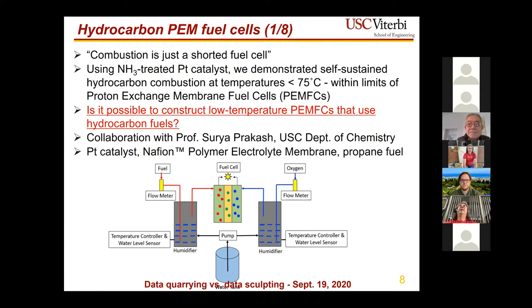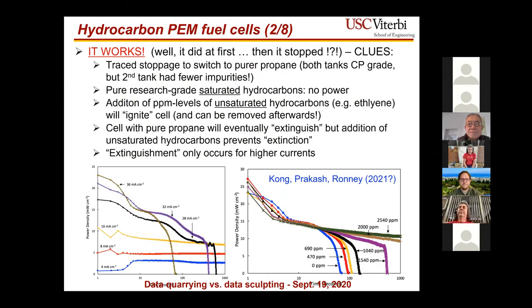They don't have fuel cell expertise, but are working with chemist Surya Prakash using the ammonia-treated catalyst with a standard Nafion polymer electrolyte membrane in a standard fuel cell testing setup. The goal is not to compete with internal combustion at large scales like the Toyota Mirai hydrogen fuel cell, but to compete against batteries at small scales — a much easier competition. The power obtained is tens of milliwatts per square centimeter, versus hundreds of milliwatts with hydrogen in the same cell.